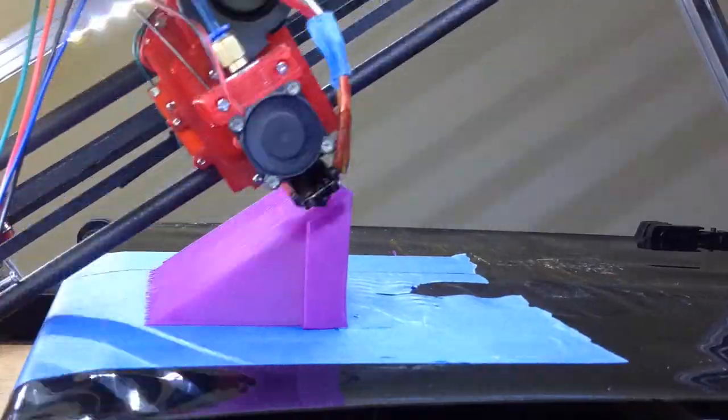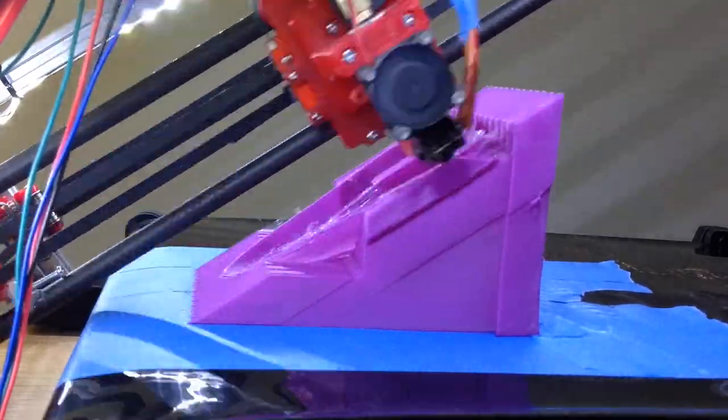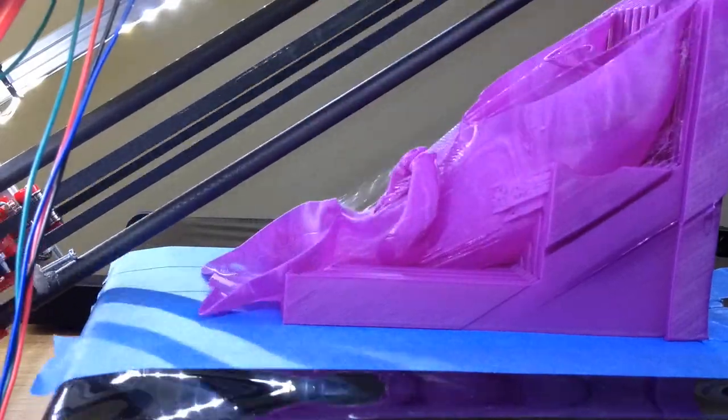Next I tried to print this Pokemon. You can see that it came with a lot of stringing and a hole in its forehead. Not very successful.